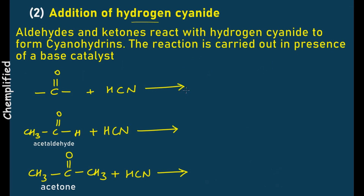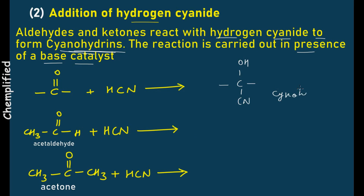When a carbonyl compound is treated with hydrogen cyanide, aldehydes and ketones react with hydrogen cyanide to form cyanohydrin. The reaction is carried out in the presence of a base catalyst, so this is a base-catalyzed addition reaction. The final product will have an OH group and a CN group — this is your cyanohydrin.